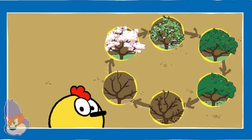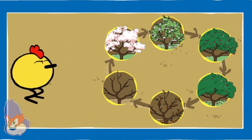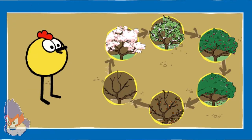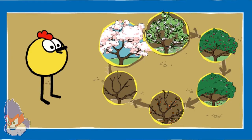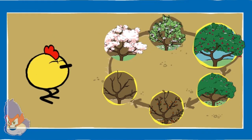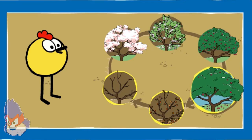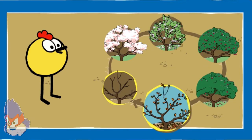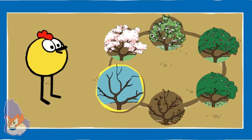Nice job! All the pictures are in the right order. This is how a cherry tree changes over the year. In the spring, flower buds grow and blossom on tree branches. Leaves grow on the branches and the flower petals fall off. Hard green cherries grow where the blossoms were, and in the summer turn red. When the cherries are ripe, they fall off the tree or get eaten by birds. In the fall, the leaves turn brown and fall off the tree. Finally, in the winter, the branches are bare.